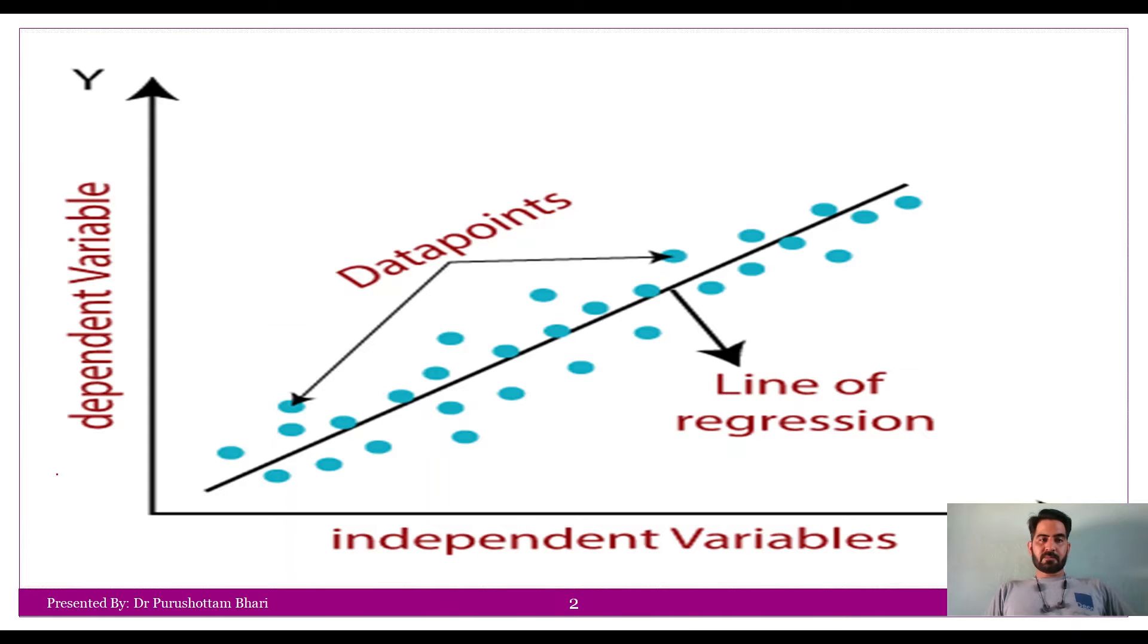Look, this is a particular two-dimensional graph. Here, there are two axes: X and Y. X-axis has the variables called independent variables. And Y-axis we keep those variables which are dependent variables.